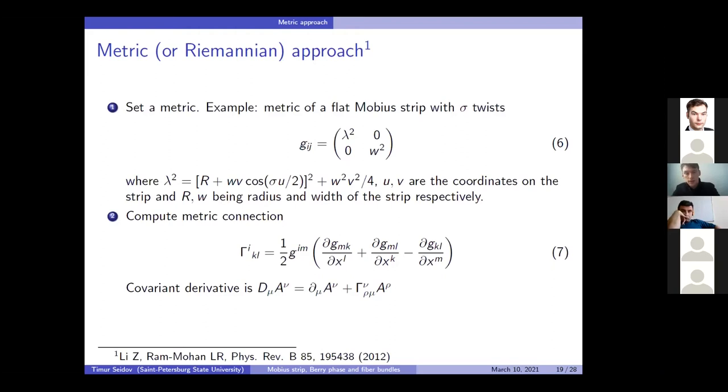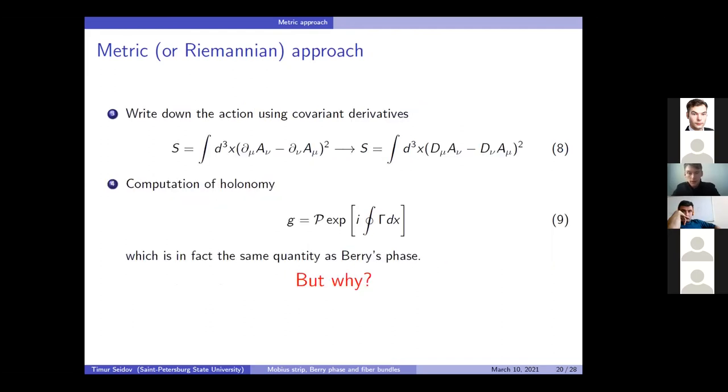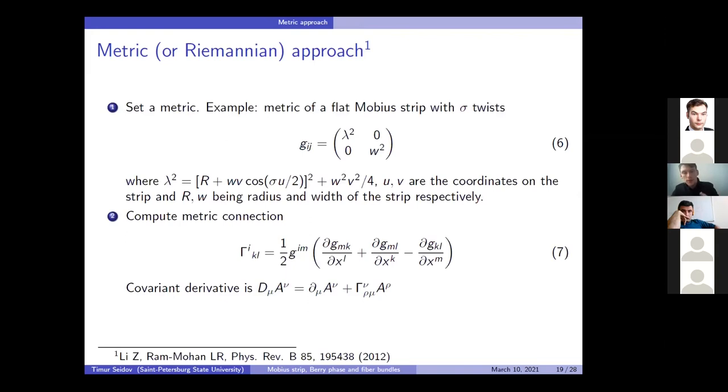And using this metric, you may compute the connection. And using the connection, you may define the covariant derivative. Sorry, I have a question. Yes. Since we have only two coordinates, do I get it right? That the Möbius strip is like infinitely thin or... So, does it have any finite thickness? No. Using this metric, it would be inadequate to trying to describe the finite thickness. Okay. So, yeah. So, okay. It's like infinitely thin. Yes.